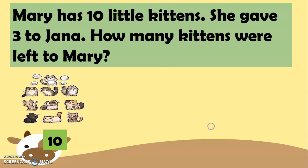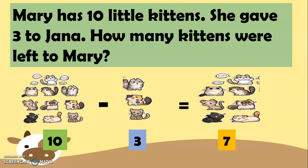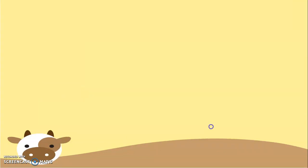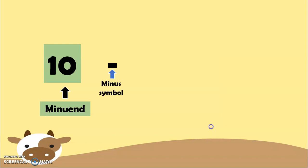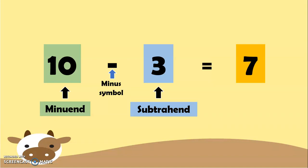So, we have 10 kittens minus 3 kittens equals 7 kittens. There you go. So, 10, which is the minuend minus 3, which is the subtrahend, equals 7, which is the difference. There you go.